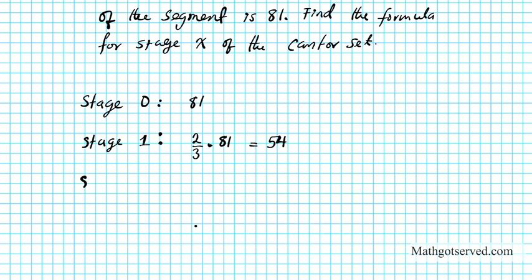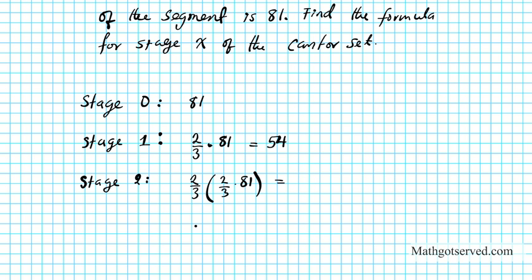For stage 2, we take out one-third of the lengths from stage 1, leaving two-thirds of stage 1. So stage 2 is two-thirds times stage 1, which is two-thirds times two-thirds times 81 — that is (2/3)² times 81. Working that out: 4/9 times 81 equals 36.